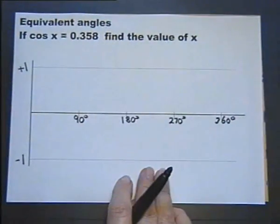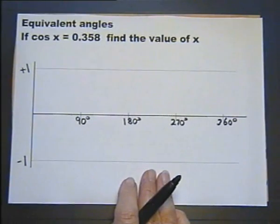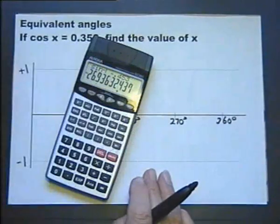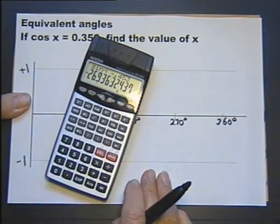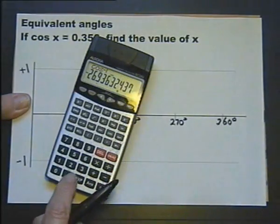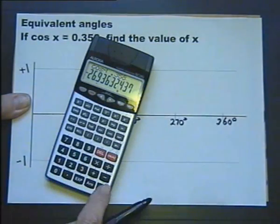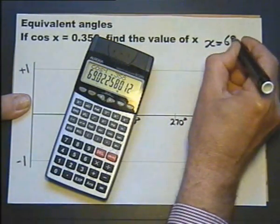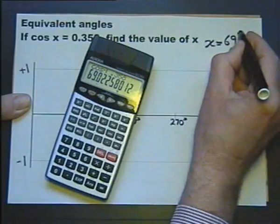Let's move on to the cosine. If cosine of x is 0.358, what is the value of x? Still working in degrees, we'll do inverse cosine 0.358, and the calculator gives us the answer that x is 69.0 degrees.